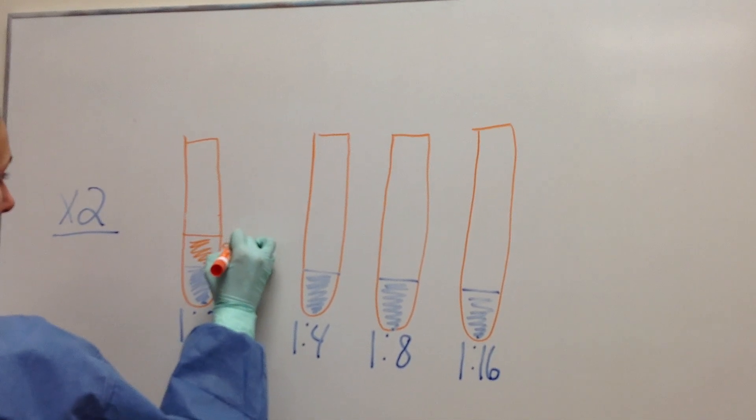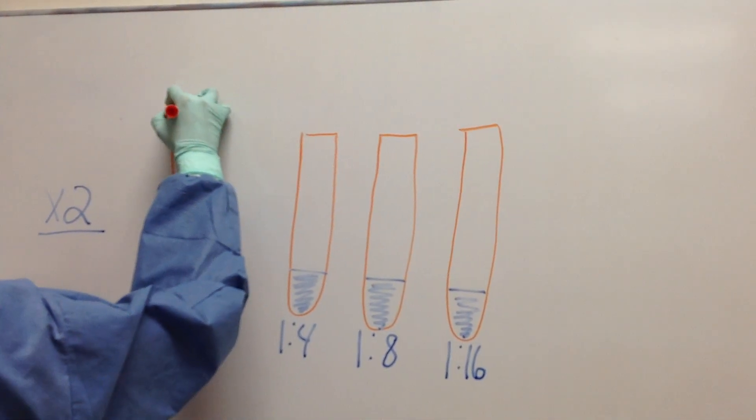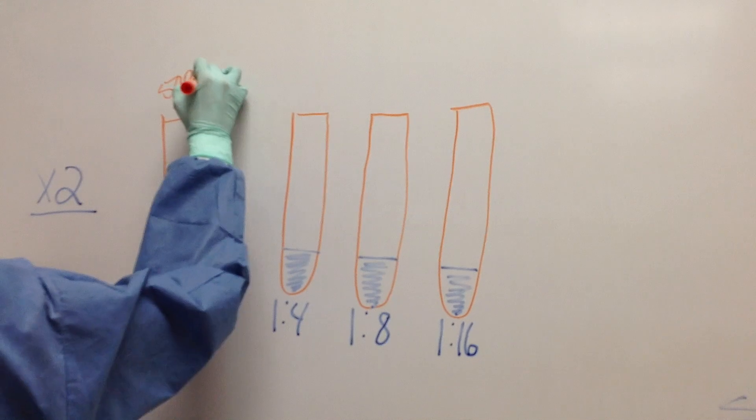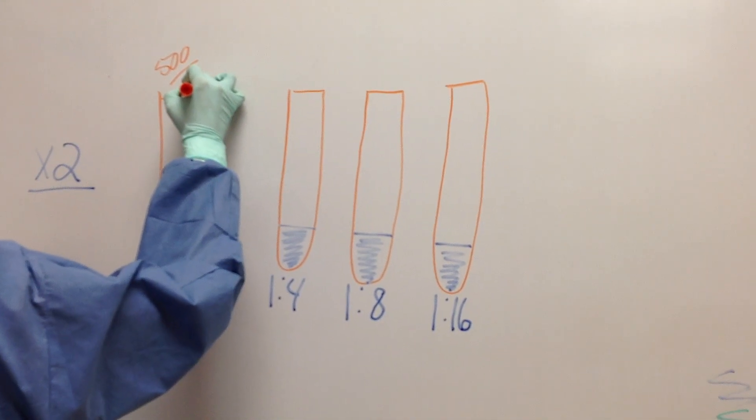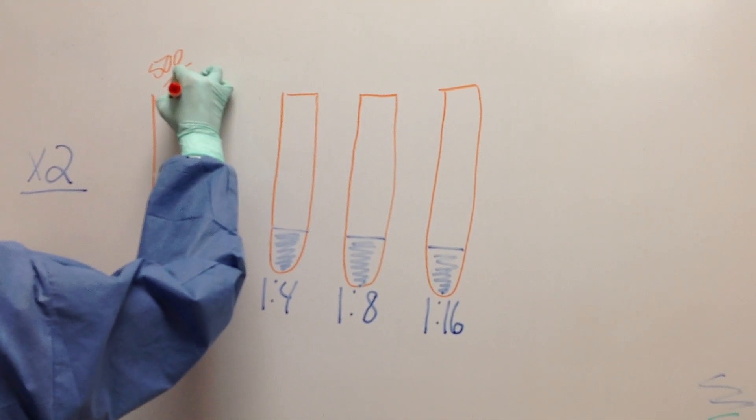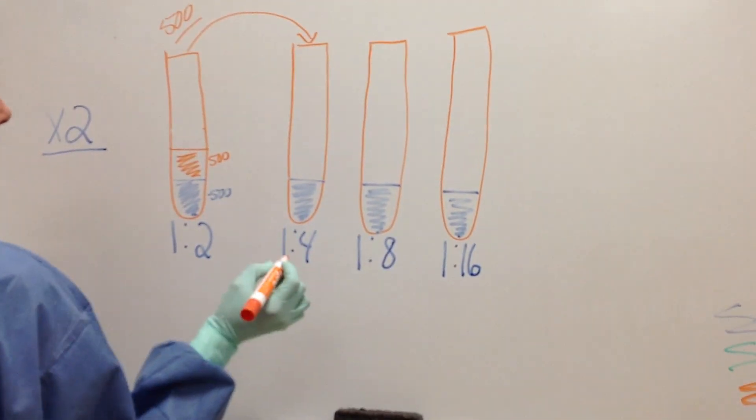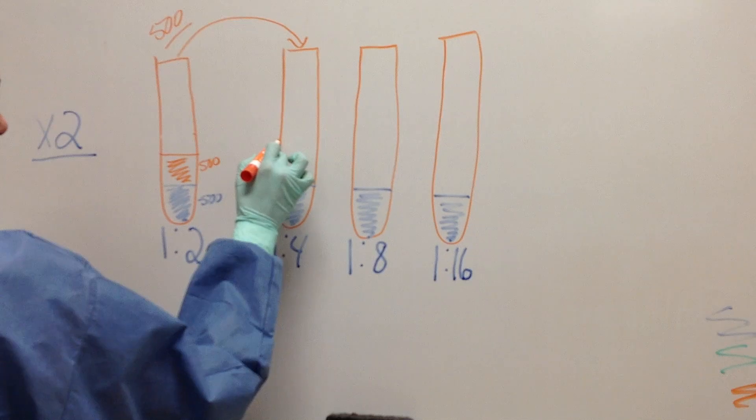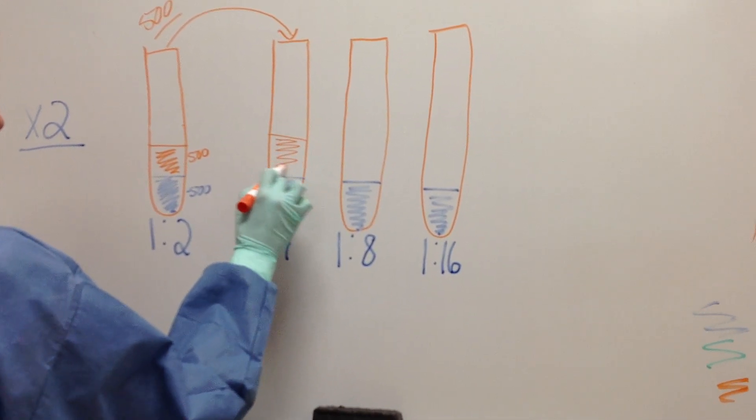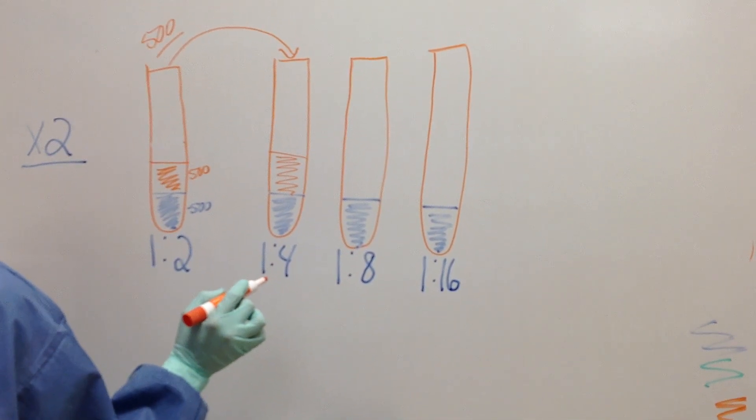Okay. We've put in 500 microliters and mixed. Now we're going to take the same amount because we're making a times 2 dilution and put into the second tube. So it will also have 500 of the first tube. So it's getting weaker.